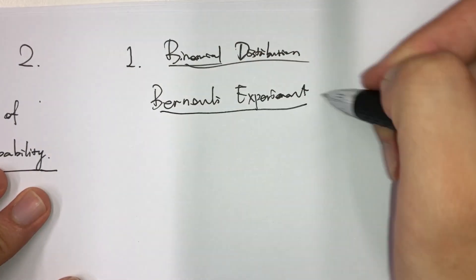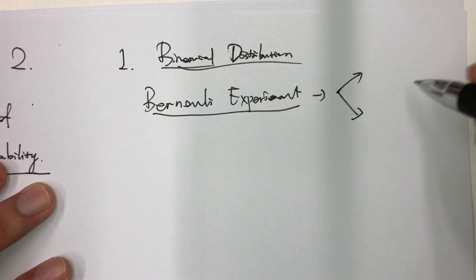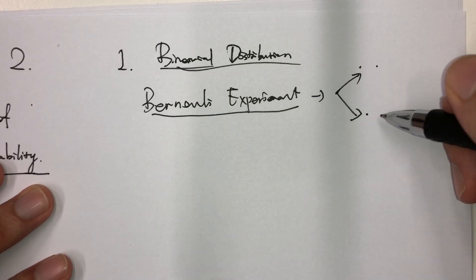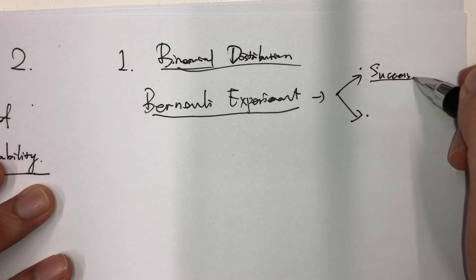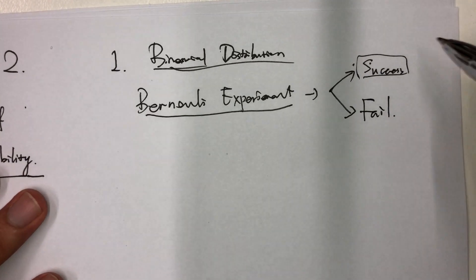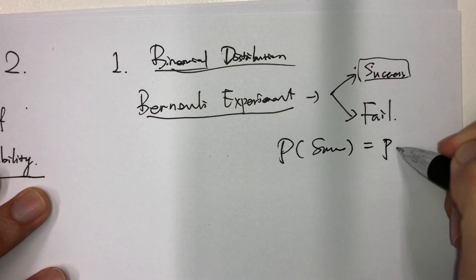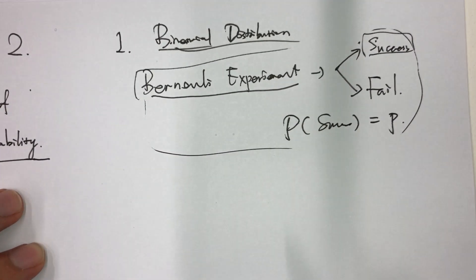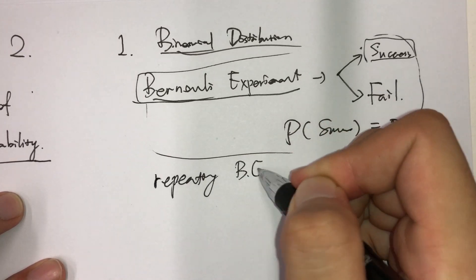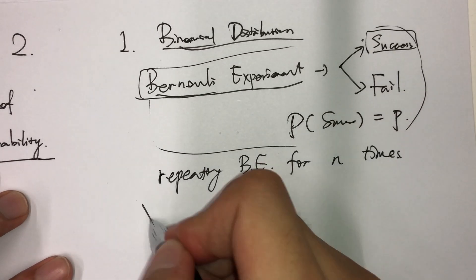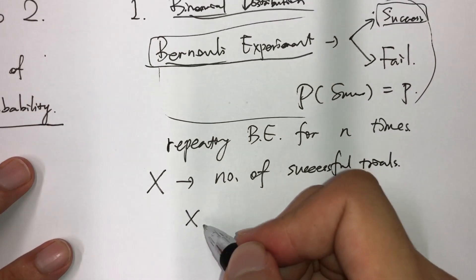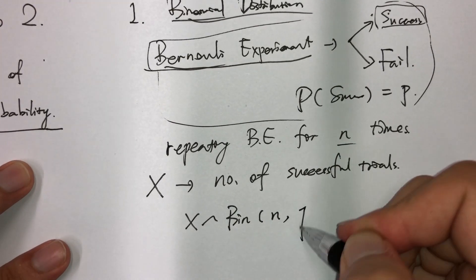The Bernoulli experiment is a kind of experiment that has only two results: either success or fail. It's not necessarily success or fail — it can be male or female, like or dislike, or whatever — but we just define one of them to be success. For example, if it is a female we define it as success. We define the probability of success to be p. Then a binomial random variable is created by repeating this Bernoulli experiment for n times. If we define x to be the number of successful trials, then x follows a binomial distribution with the number of trials n and the probability of success p.